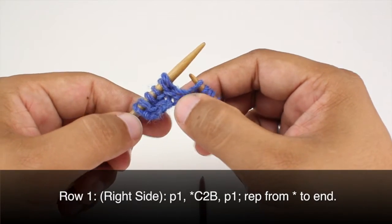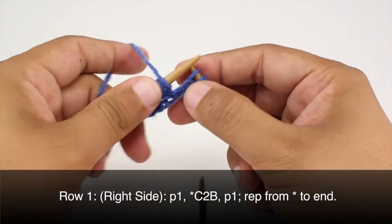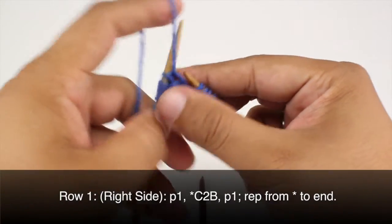And that's gonna have the same effect as the cable 2 back. It'll have a right leaning stitch. And then we can just continue in pattern. So repeat this sequence all the way until the end of the row.